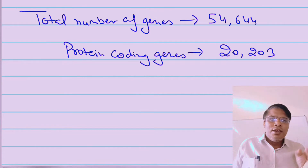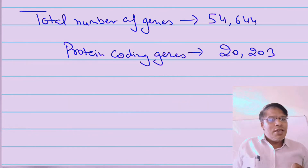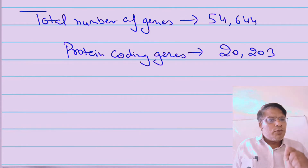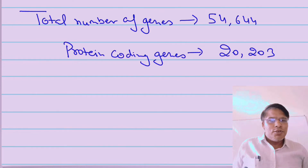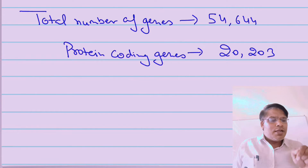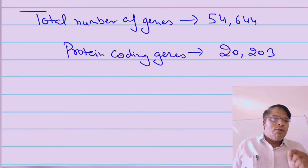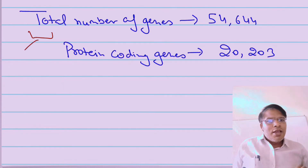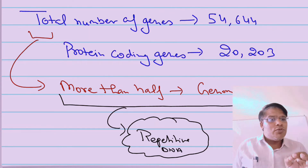Your biological product can be messenger RNA, tRNA, ribosomal RNA, or other small RNA. Only mRNA is going to code for protein. Within the human genome the number of protein-coding genes is 20,203. So the total number of genes is 54,644 — this also includes genes which are not going to code for proteins — and the protein-coding genes are 20,203. More than half of the human genome is going to have repetitive DNA.